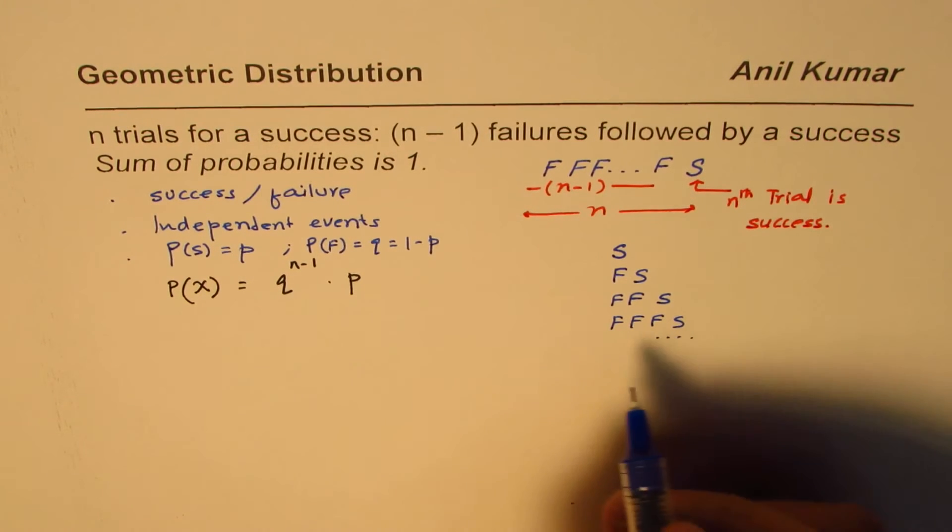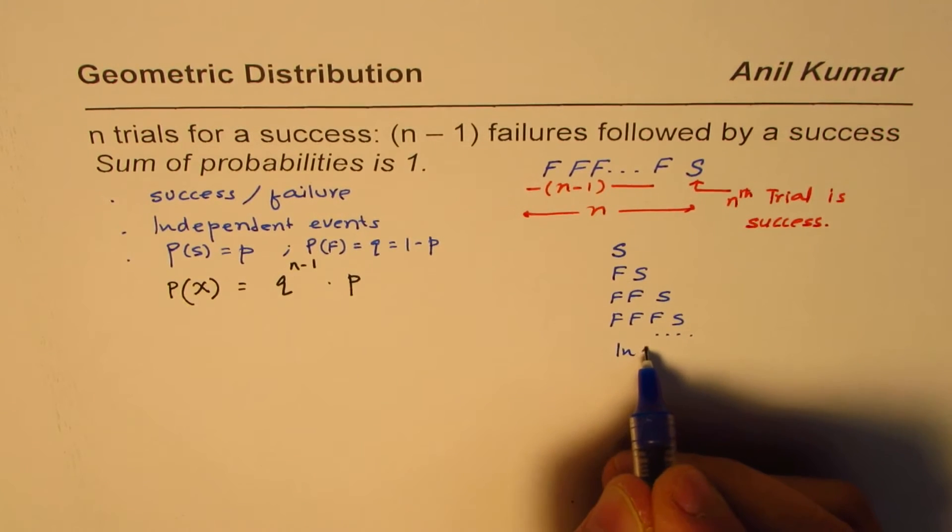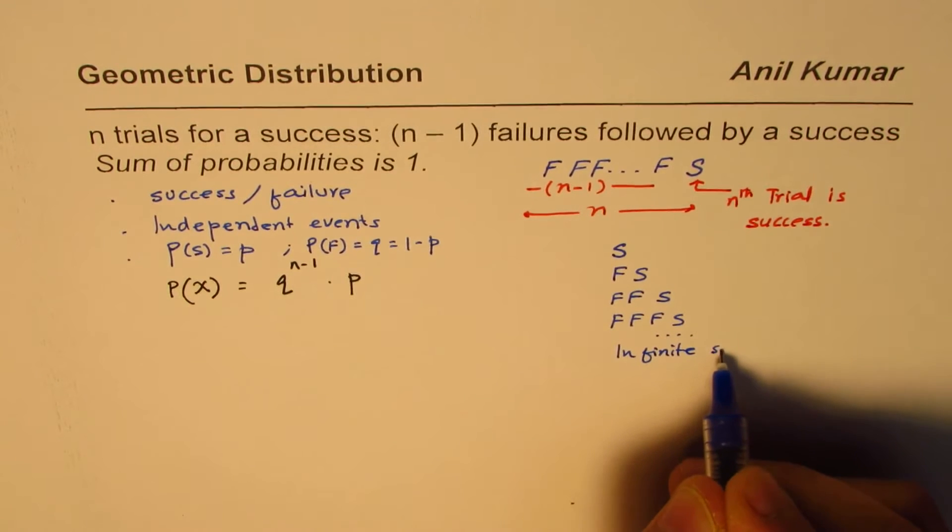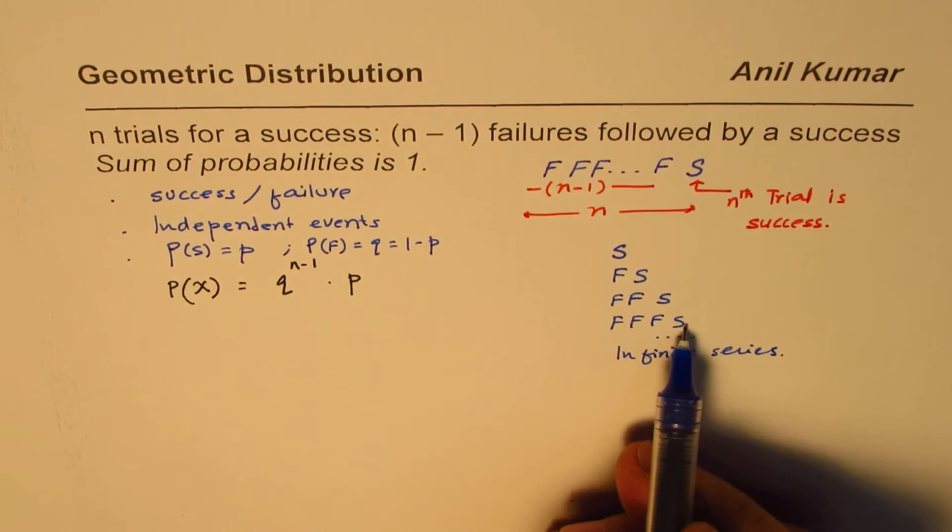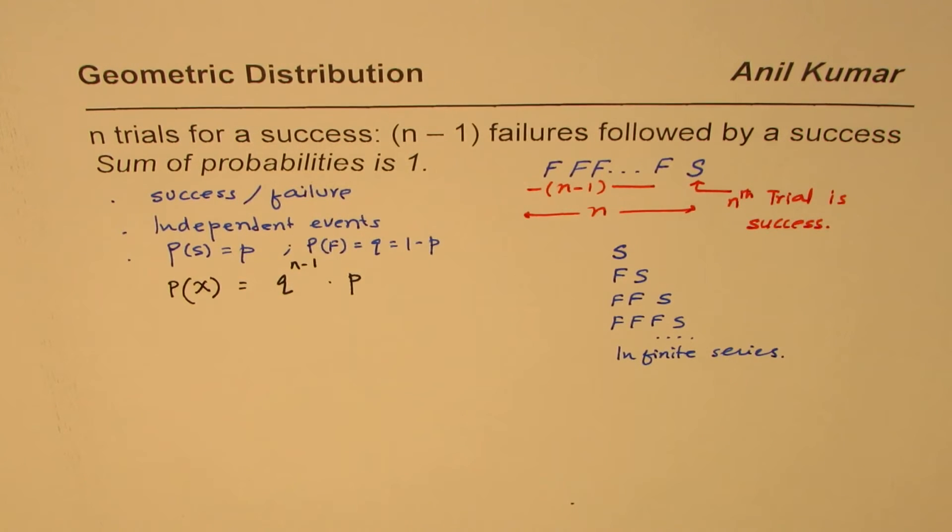Or we may just have failures, failures and failures. So it is an infinite series. It is infinite series because, you know, success may not come. So it's kind of an infinite series.